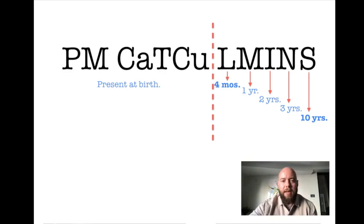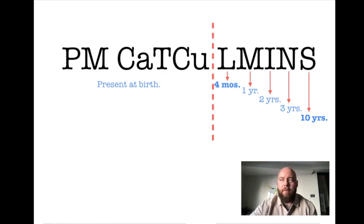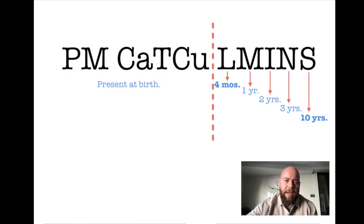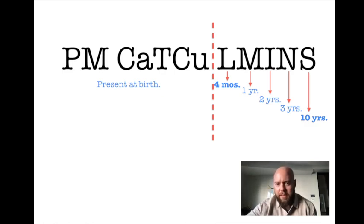The mnemonic is PM-Cat-Cull-Mins. You can remember that by thinking about cats culminating in the night — PM is for night, Cat-Cull-Mins follows. You need to remember exactly where the red dotted line is between CU and L. All the bones to the left of the dashed line are present at birth and don't help you. All the ones to the right are most important — they age the patient.